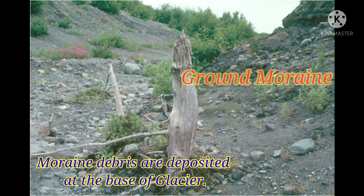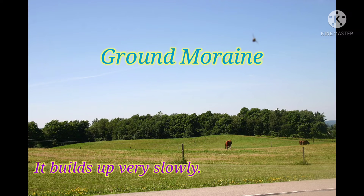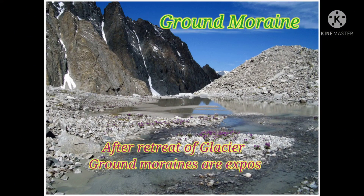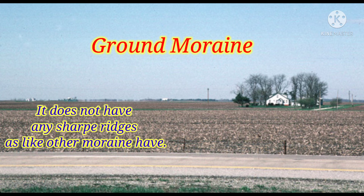Let's know about ground moraine. When glacial debris is deposited on the base of the glacier, a ground moraine forms. This type of moraine builds up very slowly due to sedimentation and dumps of debris under the glacier by a tiny stream. This type of moraine is also known as a till plain. When a glacier retreats or melts, the ground moraine is exposed. Ground moraines do not have any sub-ridges, unlike other moraines. This type of moraine is the most common and can be found on every continent.